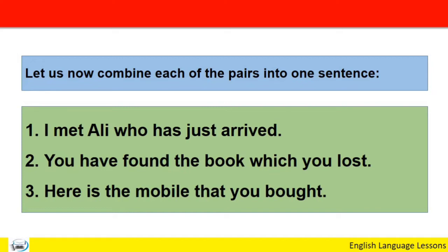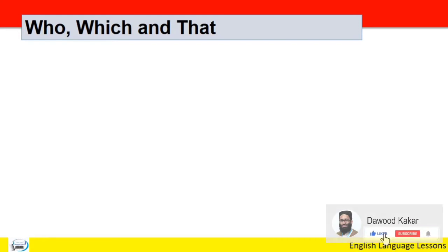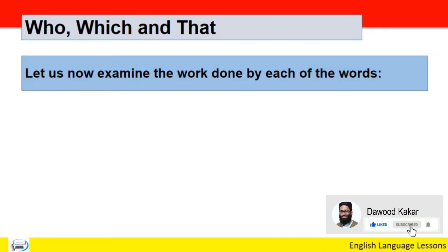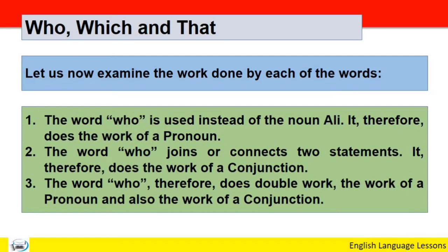ہم نے دو نئے pairs of sentences کو ایک ایک sentence میں combine کیا — who, which, اور that کا استعمال کرتے ہوئے۔ اب ہم examine کرتے ہیں کہ یہ words کیا کام کرتے ہیں۔ The word 'who' is used instead of the noun 'Ali' — it therefore does the work of a pronoun. Who نے noun Ali کی جگہ پہ استعمال ہو کر pronoun کا کام کیا۔ The word 'who' also joins or connects two statements — it therefore does the work of a conjunction.